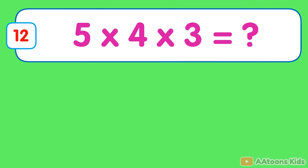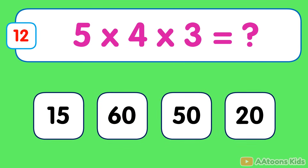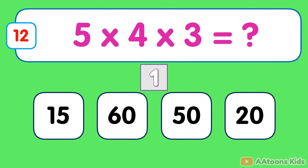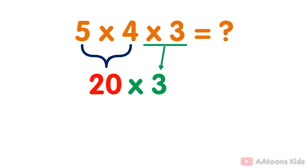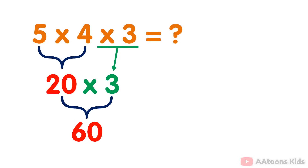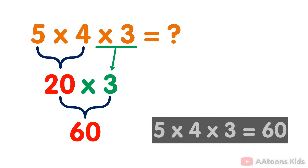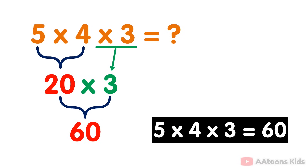5 multiplied by 4 multiplied by 3. The answer is 60. Simply multiply the numbers 5 and 4 which equals 20. Then you multiply the result 20 by 3. You will get 60. Therefore, the answer to 5 multiplied by 4 multiplied by 3 is 60.